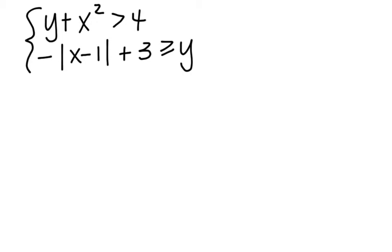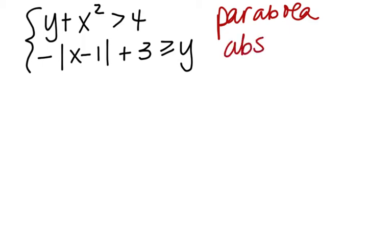First, let's identify the two curves we're going to graph. The first curve, y + x² > 4, is going to be a parabola because we have an x squared term. The second curve is an absolute value graph, so we expect it to have a v-shape.